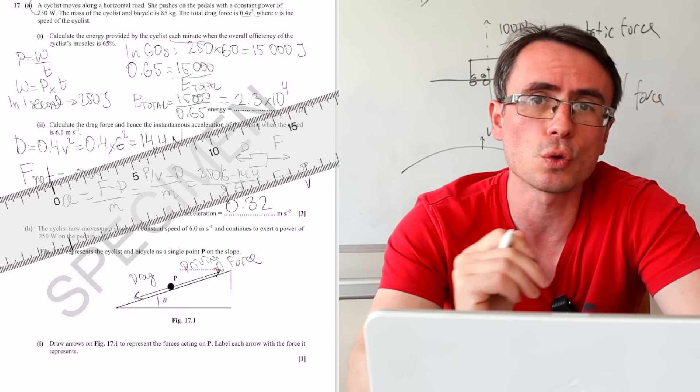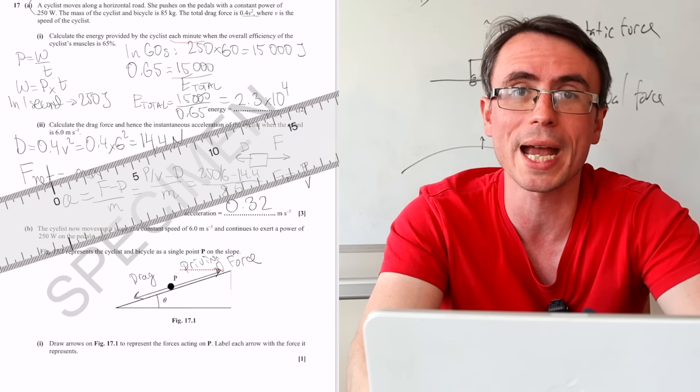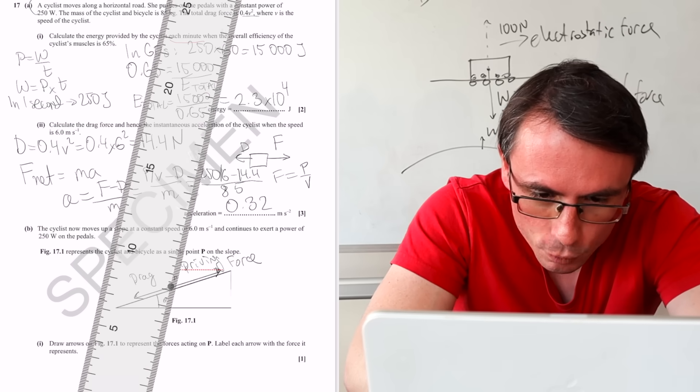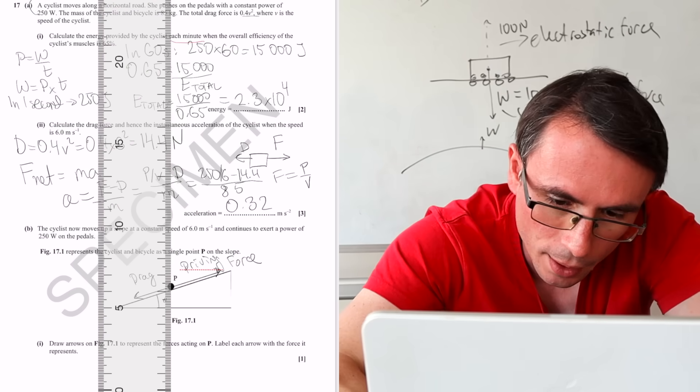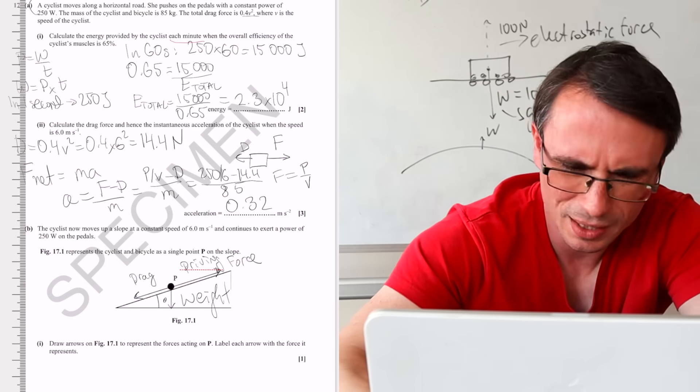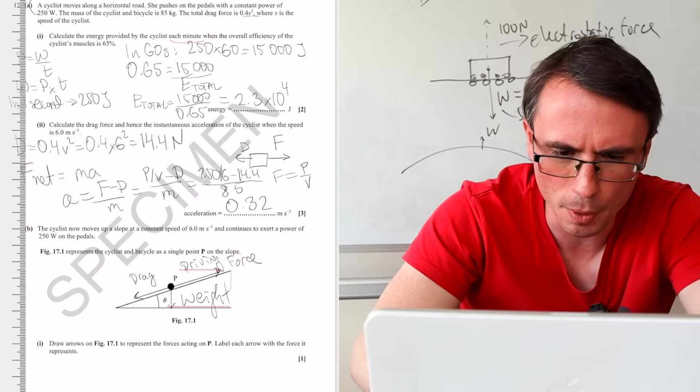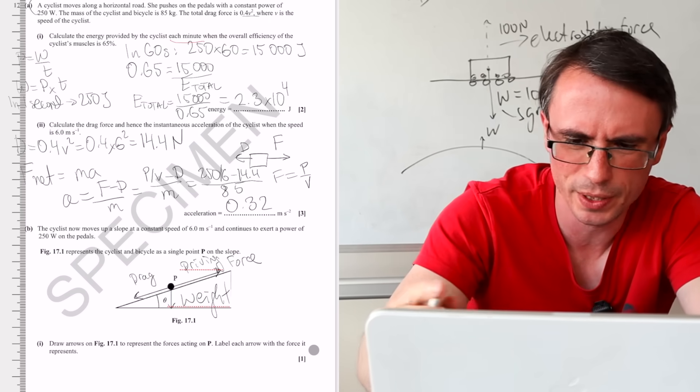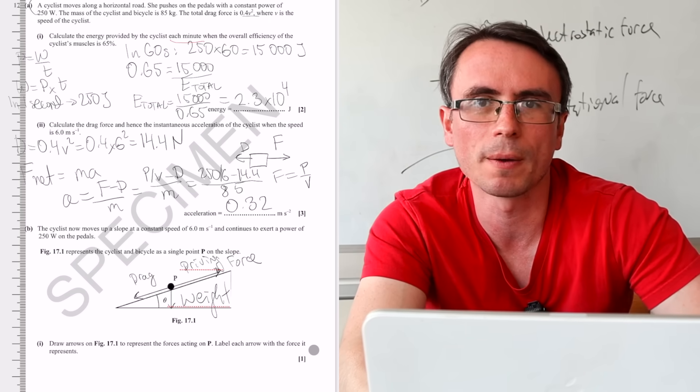So tomorrow you're very likely to have to label a force. Please don't forget to not just draw it, but draw the actual label as well. Or write the actual label. We have one more force, which is the weight. And the weight will just act vertically downwards. This will have parallel and perpendicular components, but we're not really asked to resolve it. This is just a one marker so far.